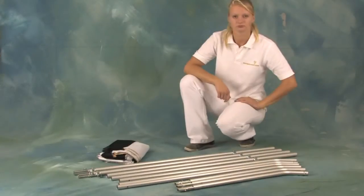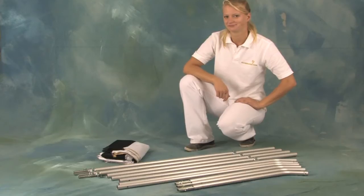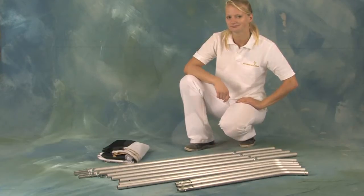The sling bag contains all of the parts of the Sun Bounce Big. There are two long frame poles, three crossbars, and one screen.